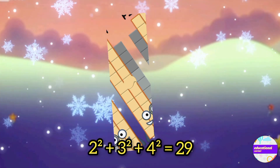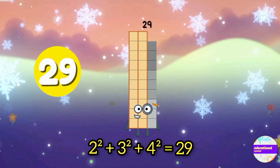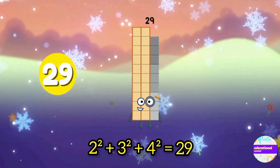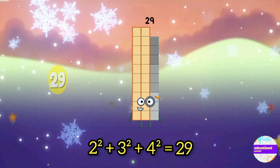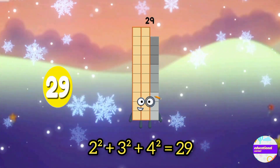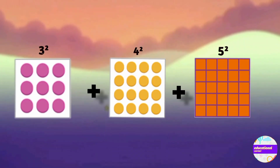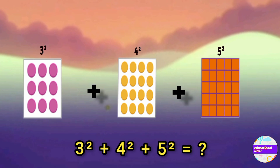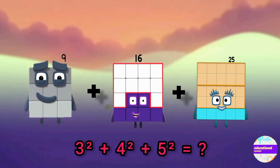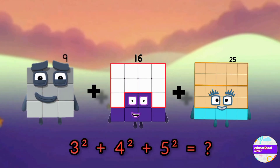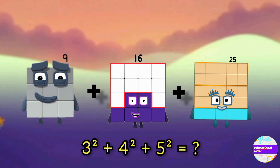The sum is twenty-nine. Next: three squared, four squared, five squared. Three squared is nine, four squared is sixteen, five squared is twenty-five. Now add them together — it's fifty.